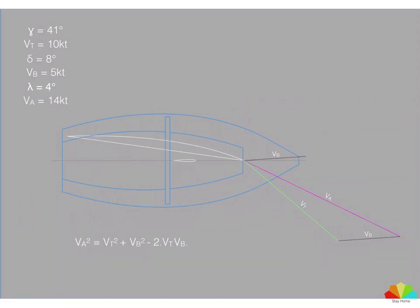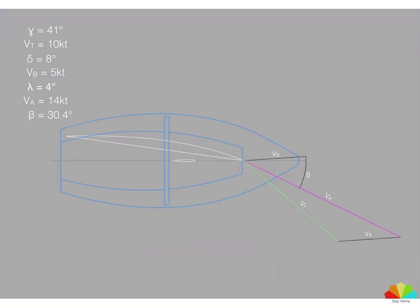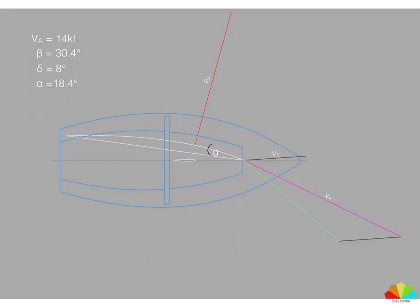We can either measure that or use the cosine rule to calculate it, and it works out to about 14 knots in this case. Similarly, we can either measure or calculate via the sine rule beta, which is the apparent wind angle, and in this case that works out to about 30 degrees.